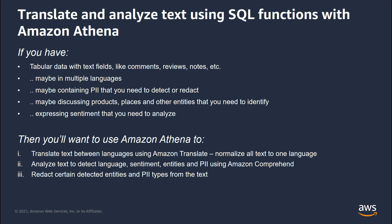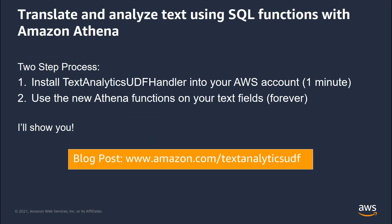You can also do redaction — take a string and identify entities or personally identifiable information to be removed from that string. I'll show you examples of this in action. There's a simple two-step process to get up and running. First, you install the Text Analytics UDF handler into your AWS account. This process takes under a minute.